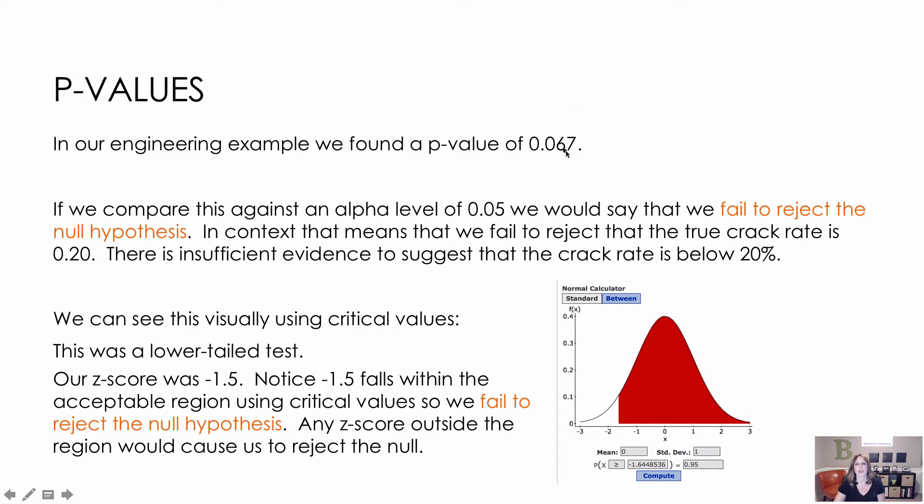So let's look at that example that we just looked at a few minutes ago where we found a p-value of 0.067 or 6.7%. So we're going to compare this against an alpha level of 0.05. And what that means is if we get one that is less than 0.05, then we're going to reject. Because we're going to say, well, that's really out of control. If it's greater than 0.05, then we're going to fail to reject because it's not surprising to us. So if we compare our 6.7% against 0.05, 6.7% is higher, and therefore we would fail to reject the null hypothesis.